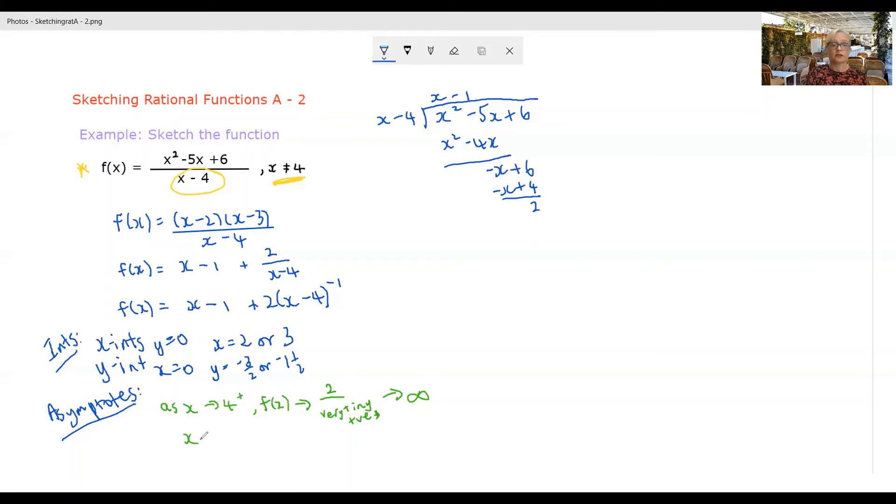If x is tending towards four from below, then f of x will again be tending towards two in the numerator, but in the denominator, we're going to have a very tiny negative number, aren't we? Because we're just a little bit less than four. So if we take four away from it, we'll have a negative number.